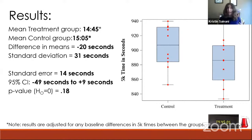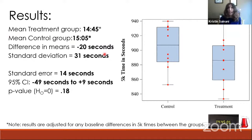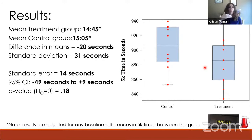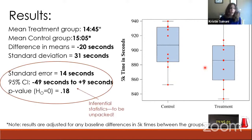We are randomly assigning 10 runners to drink a placebo drink for four weeks, and 10 to drink cherry juice as a recovery drink for four weeks. The outcome is their performance in a 5k time trial. We had them run the time trial before the intervention so we can adjust for any baseline differences. The treatment group did a bit better — mean time of 1445 seconds versus 1505 for the control group, adjusted for baseline differences. That's a difference in means of negative 20 seconds. Negative numbers mean the treatment group ran faster. The standard deviation in running times within the groups is 31 seconds. The standard error, confidence interval, and p-value are the inferential statistics I'm going to unpack today.